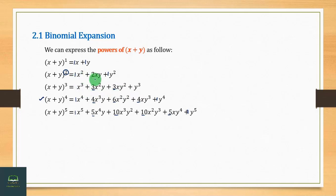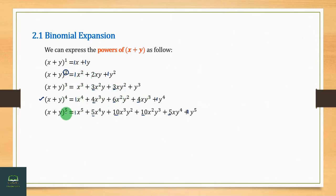For the coefficients: the 1st row is 1, 1. The 2nd is 1, 2, 1. The 3rd is 1, 3, 3, 1. The 4th is 1, 4, 6, 4, 1. The 5th is 1, 5, 10, 10, 5, 1. This gives us the binomial coefficients.